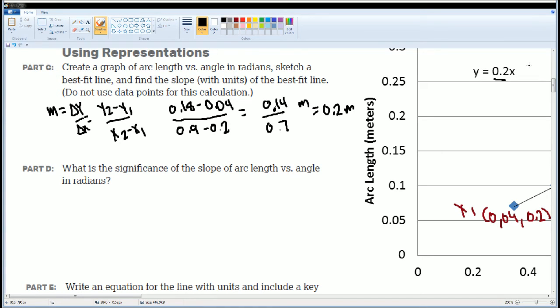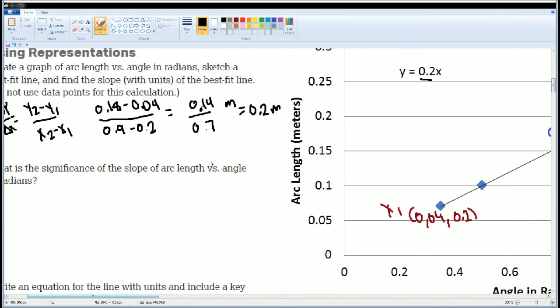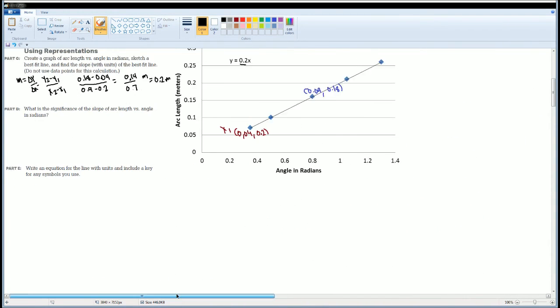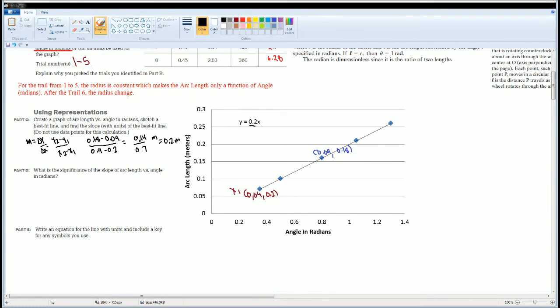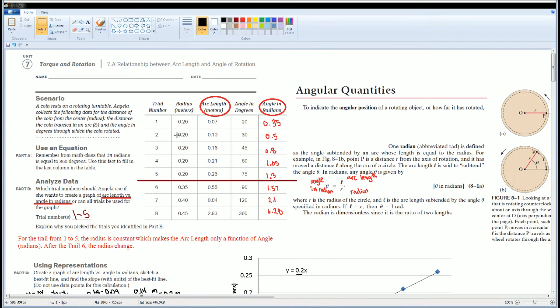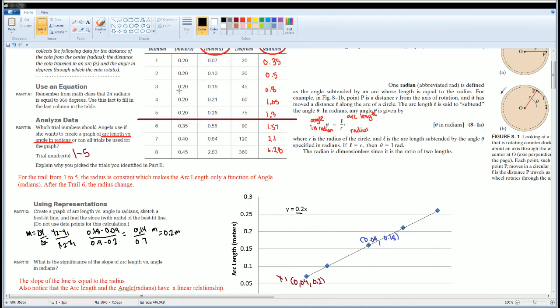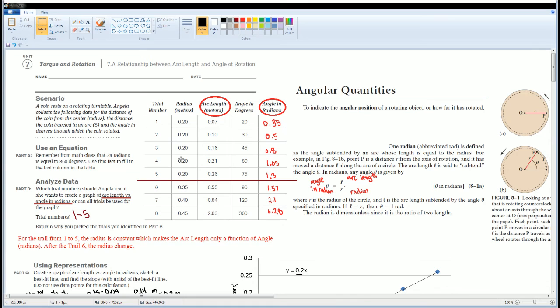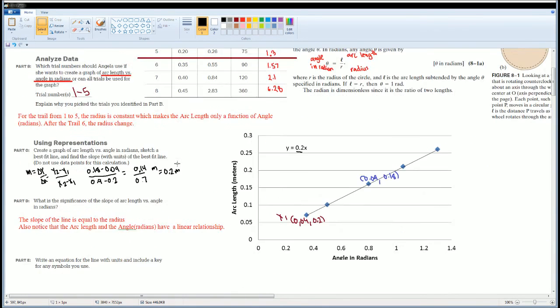The next part is: what is the significance of the slope? The slope should tell you something. What do you think the slope is? Pause the video and try to answer that. I said here that the slope of the line is equal to the radius. Also notice that the arc length and the angle in radians have a linear relationship. Look at this value: 0.2 was your radius. That's what was significant about it.